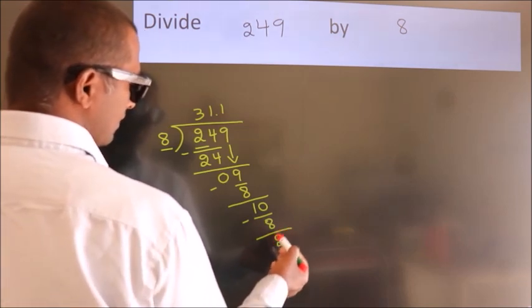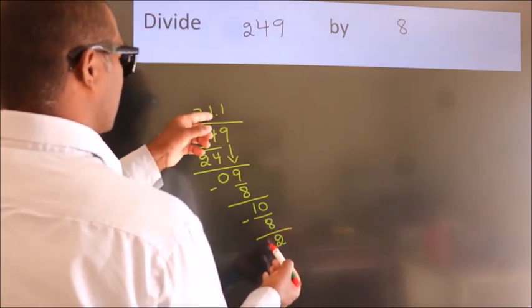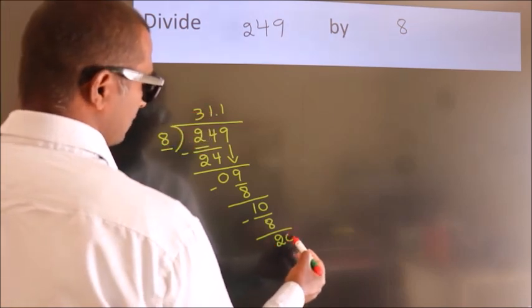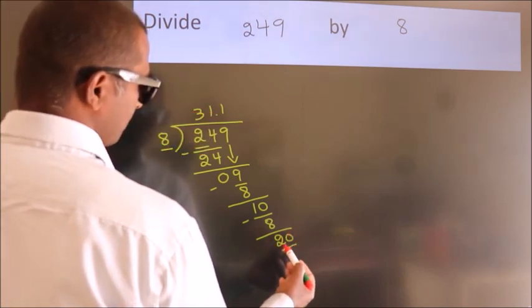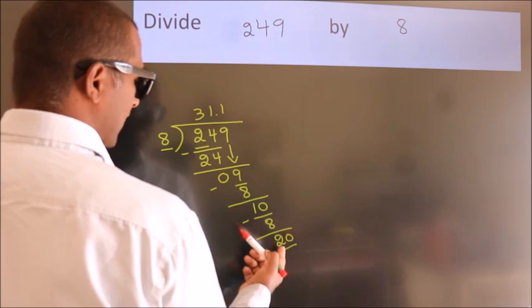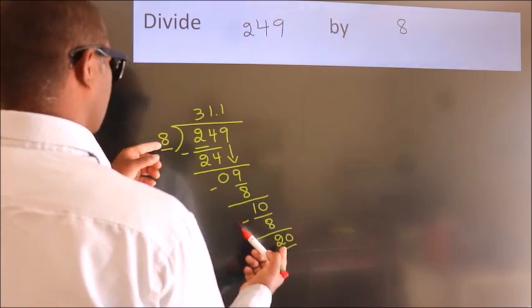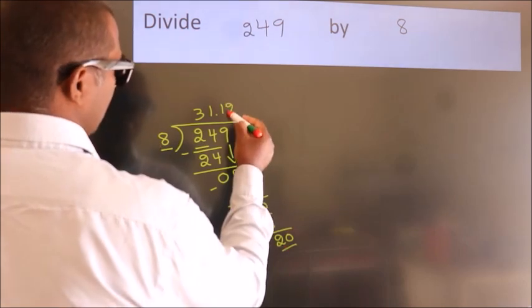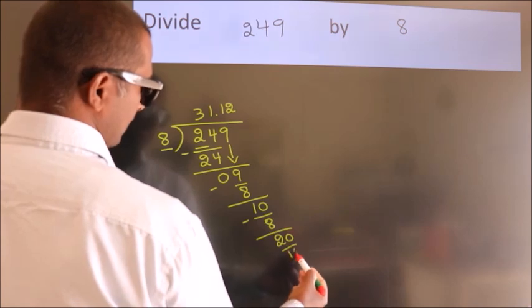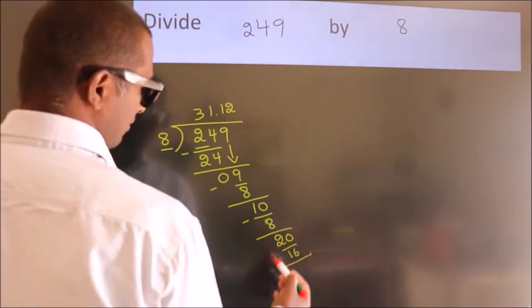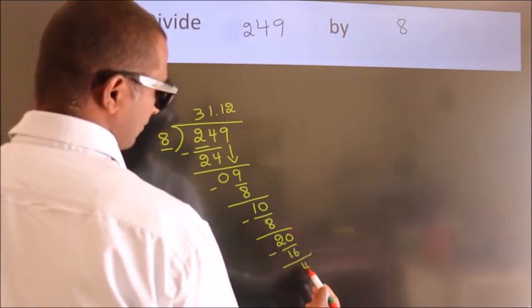After this, we already have the decimal. So directly take 0. So 20. A number close to 20 in 8 table is 8 twos, 16. Now we subtract. We get 4.